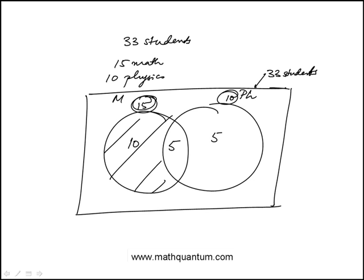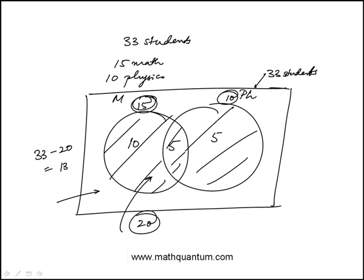So if you just add these regions, that's a total of 20. The question is, how many students are not enrolled in either a mathematics course or a physics course, which is this outside, and that would be 33 minus 20, or 13, answer choice C.